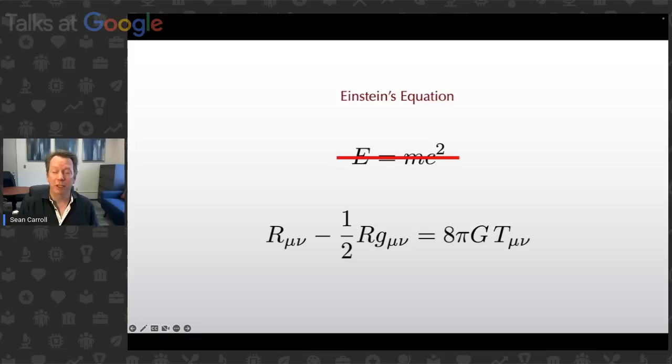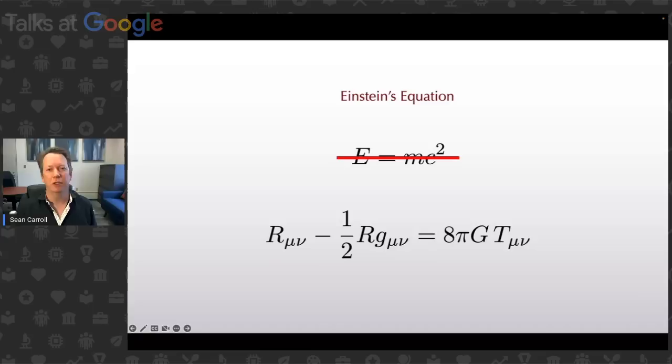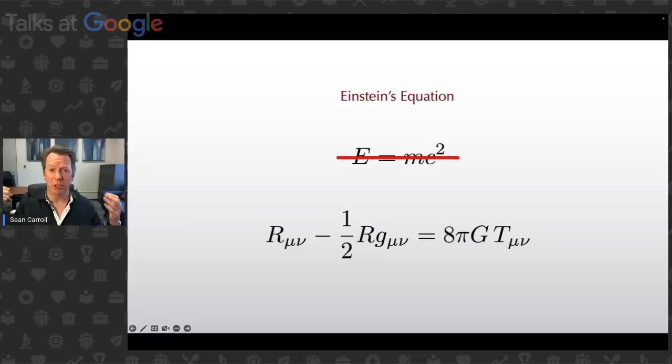This one you probably have not heard of, depending on your physics background. You could easily get a bachelor's degree, or in many cases a PhD in physics, and never come across it. This is Einstein's field equation for general relativity — his theory of space-time, curvature, and gravity. If I were to read it out loud, it would say: R mu nu minus one half R g mu nu equals 8 pi G T mu nu. You can kind of see why it is not very much embedded in the popular imagination. It looks intimidating. There are subscripts in Greek, and we don't know what anything means. But you've come to the right place — if you'd like all of that unpacked, this is exactly what we're going to do.